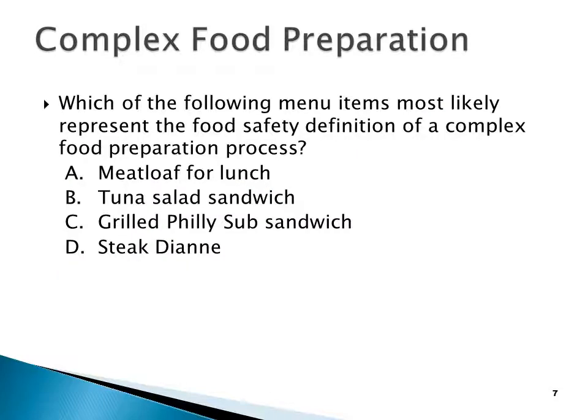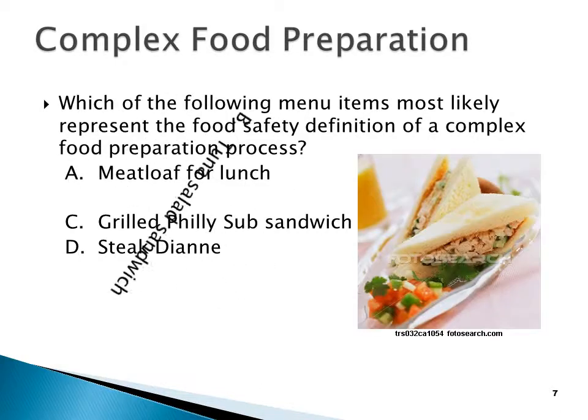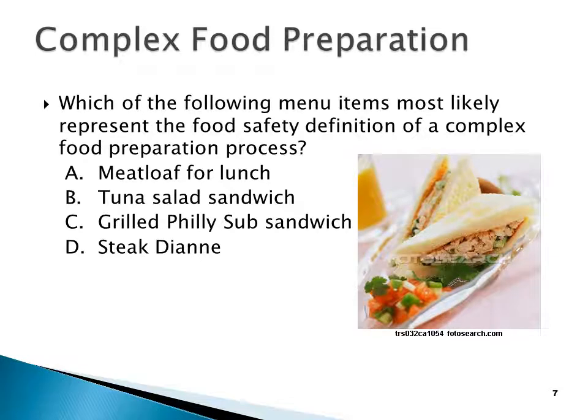Which of the following menu items most likely represents the food safety definition of complex food preparation? Meatloaf for lunch, tuna salad sandwich, grilled Philly sub, or steak Diane. Probably three of the four you're preparing right now to serve right now. I'm calling the tuna salad sandwich complex because probably you made the tuna several days ago — you'd make enough for a few days and put it back in the refrigerator. So that would probably fall into the complex recipe pile.